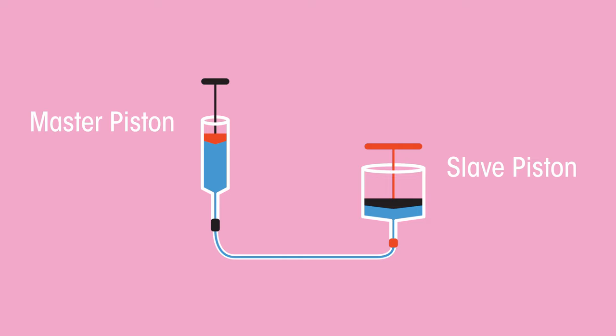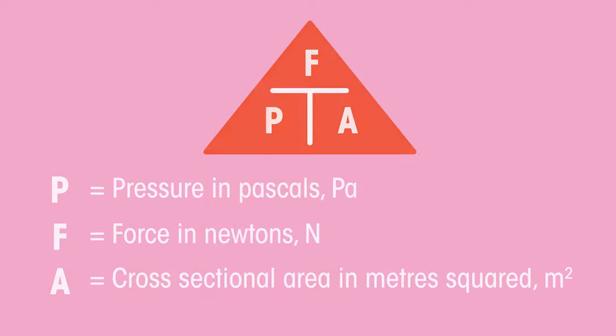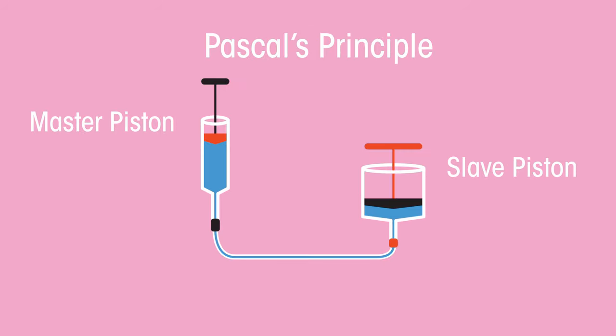The science of hydraulics is due to Pascal's principle. Because liquids can't be compressed, the pressure stays constant between the master and slave piston. And thanks to the relationship between pressure, force and area, it means a relatively small force can be applied to the master, which will result in a much larger force on the slave.